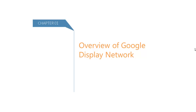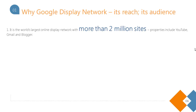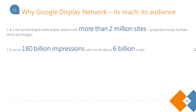Let me begin by going over the Google Display Network. Why should you consider it? It is definitely the world's largest online display network. It has more than 2 million sites, and its properties include popular sites like YouTube, Gmail, and Blogger. You don't want to miss out on targeting people visiting these popular websites. It serves 180 billion impressions each month — about 6 billion per day.